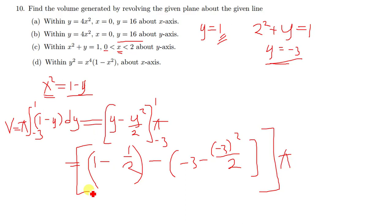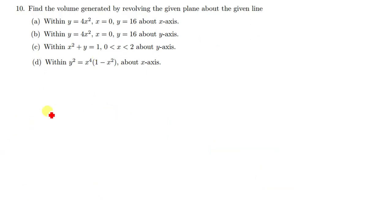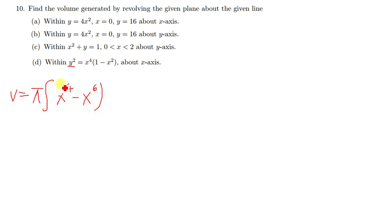Moving on to the last question, part D. Part D says we have to rotate this about the x-axis, and we haven't been given the limits on this one. Our volume is always found by integrating with pi outside. Since our y is already squared, I'm just going to expand this to get x to the power 4 minus x to the power 6, and we differentiate with respect to x.